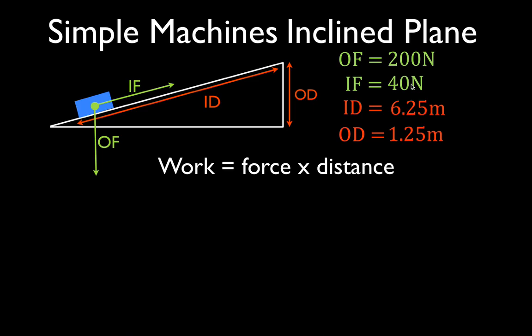Now, when we calculate the work, the simplest way to calculate the work is simply the force times the distance, which we can abbreviate W is F times D.